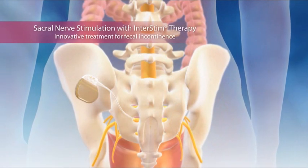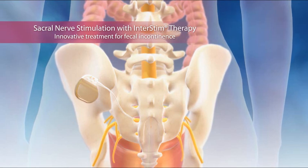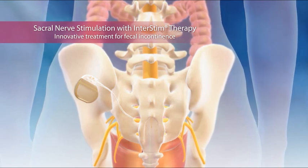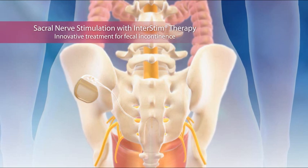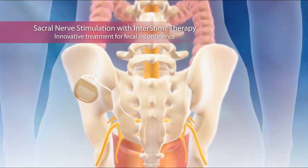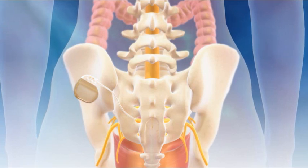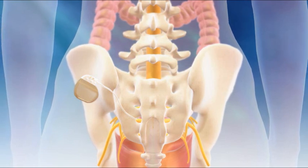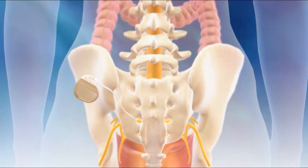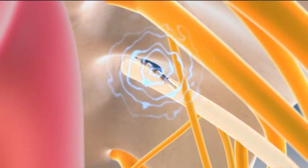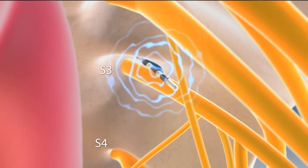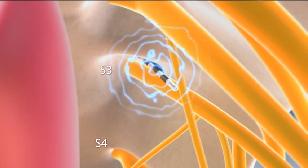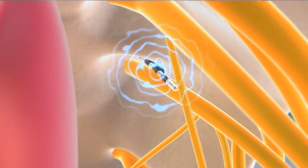Sacral nerve stimulation with InterStim therapy may be an effective treatment for patients with fecal incontinence. InterStim therapy provides neurostimulation to modulate the communication among the pelvic floor, anal sphincters, colon, and the brain through the sacral nerves. The therapy involves a minimally invasive procedure, placing a lead or thin wire near the S3 or S4 nerve root, connected to a neurostimulator that is usually implanted in the buttock. The third and fourth sacral nerves are mixed nerves, containing voluntary somatic, sensory, and autonomic motor nerves, both afferent and efferent, any or all of which may contribute to the clinical effect of sacral nerve stimulation.